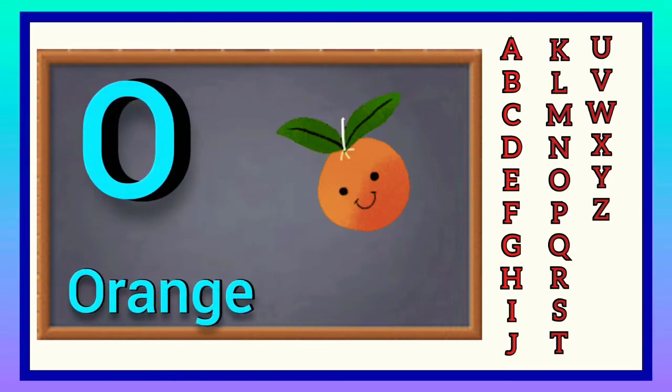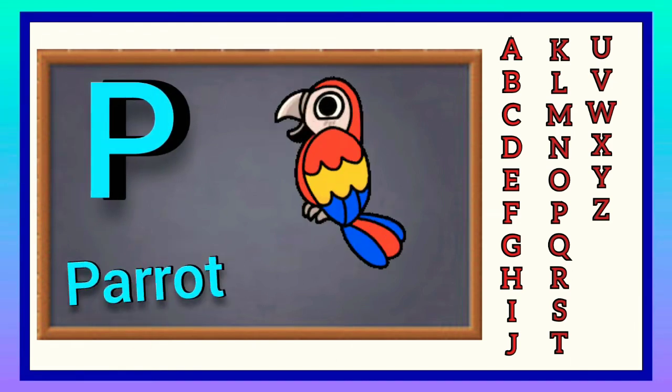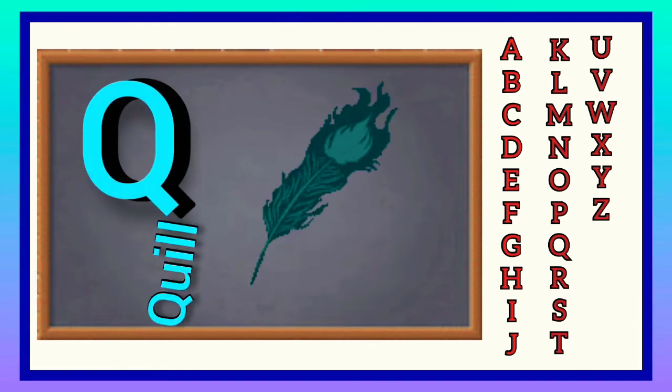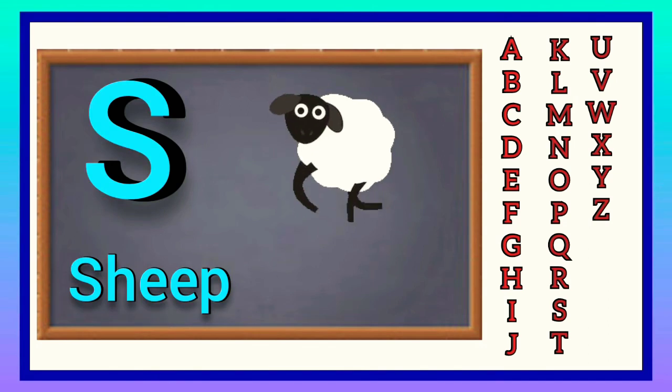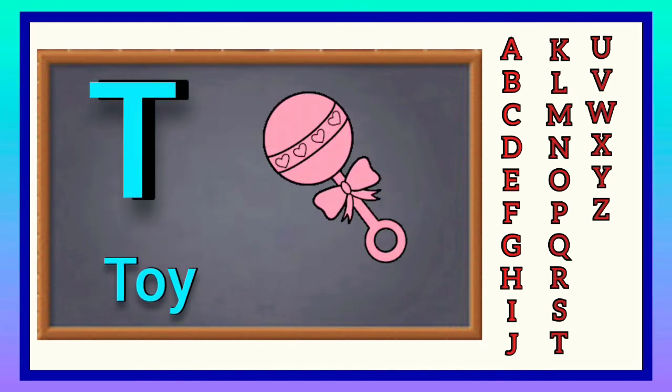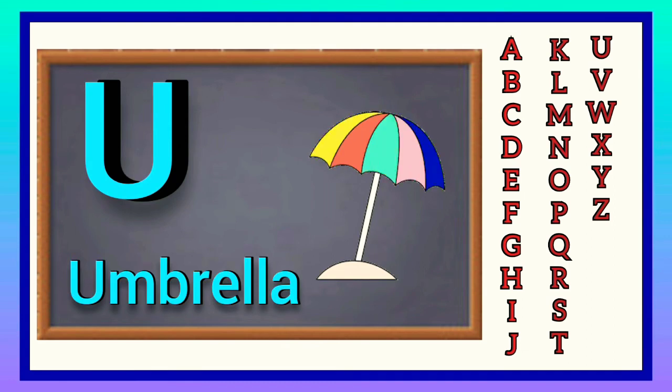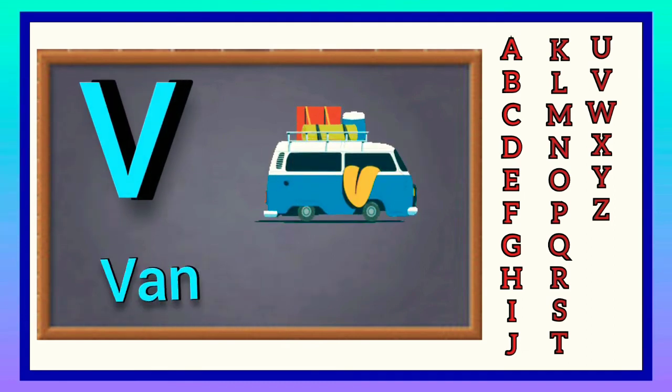O for orange, P for parrot, Q for quill, R for rabbit, S for sheep, T for toy, U for umbrella, V for van.